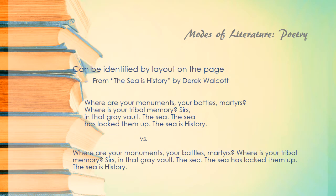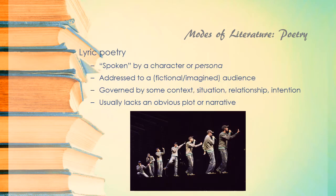As we talked about in the last lecture, poetry can generally be identified by its layout on the page because it's usually written in verse. Here's that same Derek Walcott excerpt — the top is as originally presented in verse, the bottom is what it would look like in prose, where there's no attention to rhythm or the quantity of syllables and stresses in the line. You can see the difference between verse and prose. Normally when we think about poetry, we think about lyric poetry, though there are other kinds like narrative poetry.